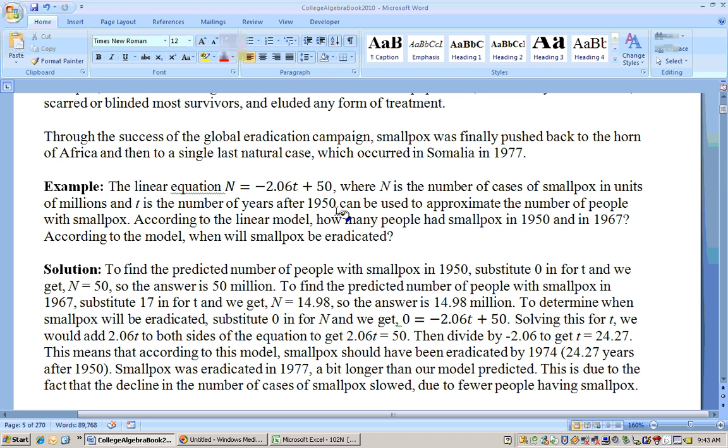So on this particular problem, it says how many people, according to this model, had smallpox in 1950 and 1967, and also when will smallpox be eradicated? To find out, according to this model, how many people had smallpox in 1950, well, T is the number of years after 1950. So we could say T equals 0 is 1950.